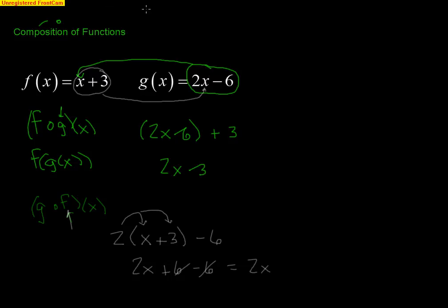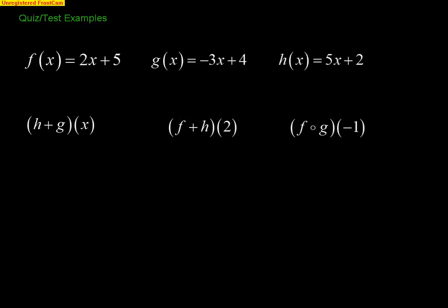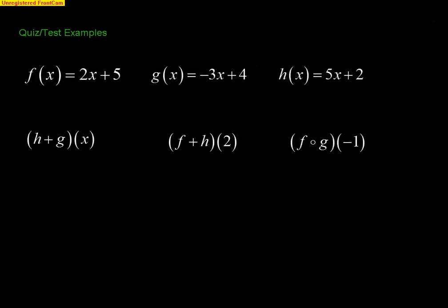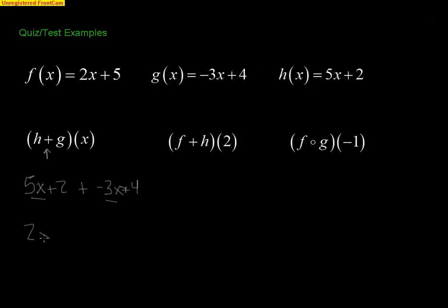Now here's what it looks like on a quiz or test. We have three functions: f(x) = 2x+5, g(x) = −3x+4, and h(x) = 5x+2. First problem: (h+g)(x) — this is addition of two functions, no multiplication. So h plus g: 5x+2 plus −3x+4. Combining like terms, 5x and −3x give 2x, and 2+4 gives 6, so the answer is 2x+6.